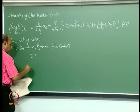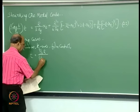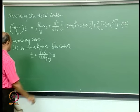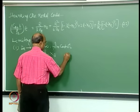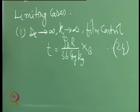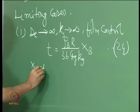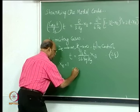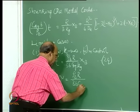Under film control, the equation can be arranged as T equal to rho_B * R / (3 * B * C_AG * K_G) * X_B. This is equation 24. We can also find the time required for 100 percent conversion. For X_B equal to 1, we call this tau, simply rho_B * R / (3 * B * C_AG * K_G).